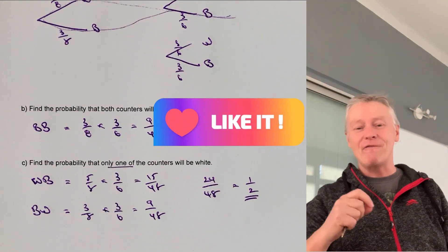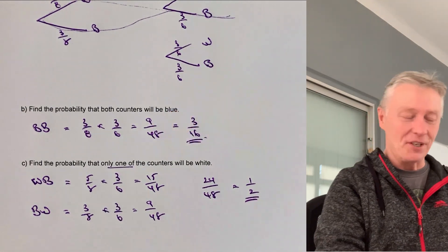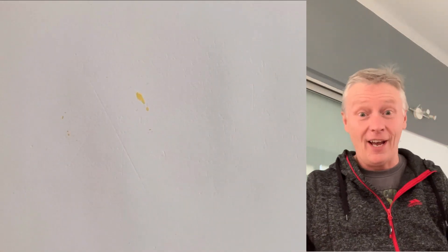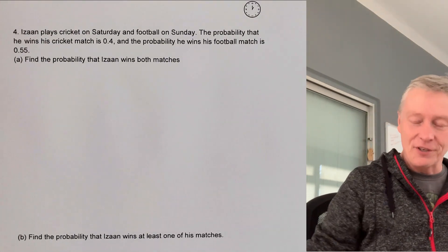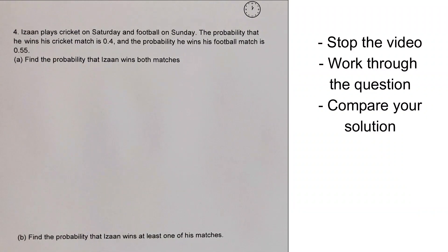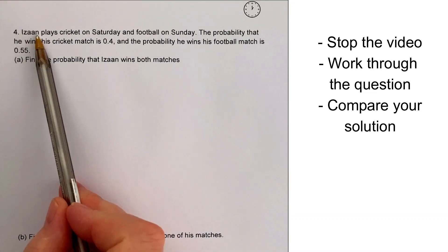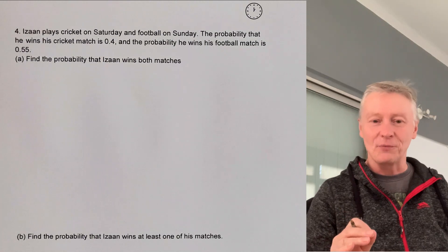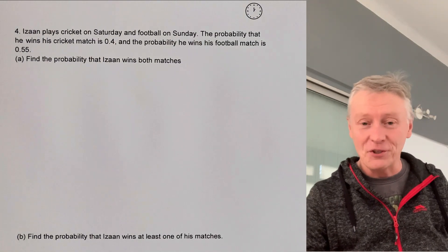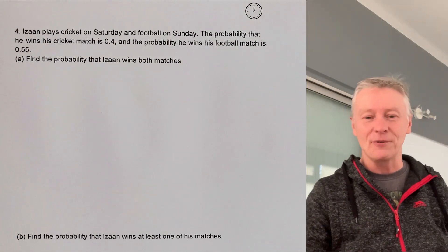Let's move on to the final question. Please do stop the video, have a go at this question, and then compare your solutions. This one is about cricket and football — Izan plays cricket on Saturday and football on Sunday. I'm going to draw a probability tree diagram to answer the questions.